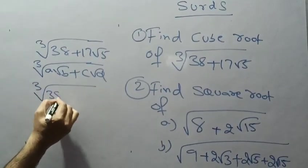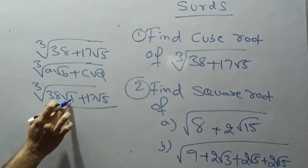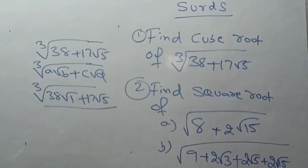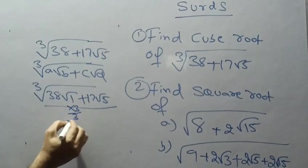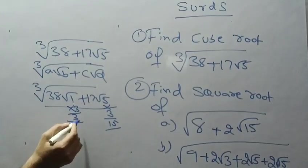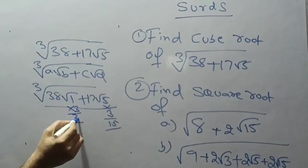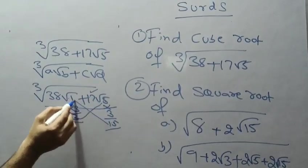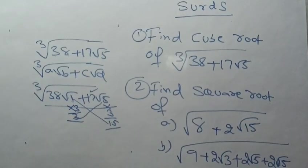If I write 38 as 38·√1, now I have the form a√b + c√d. To check the condition, we multiply the root values by 3: 3×1=3 and 3×5=15. Then adding: 15+1=16, but we need 17. So this form 38·√1 does not satisfy the condition.